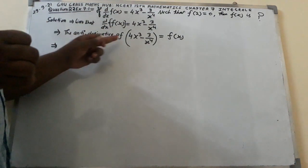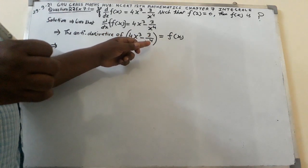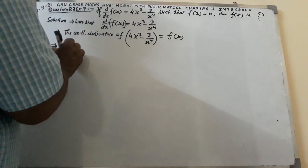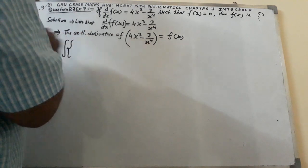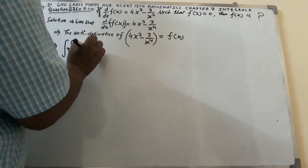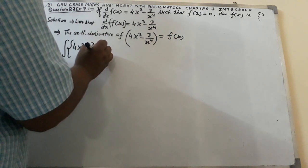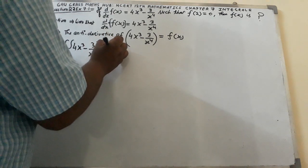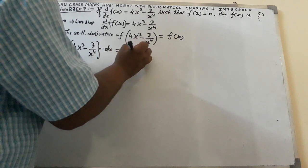So the anti-derivative of 4x cubed minus 3 over x raised to the power 4 comes out to be: the integral of {4x cubed minus 3 over x raised to the power 4} dx equals f of x.